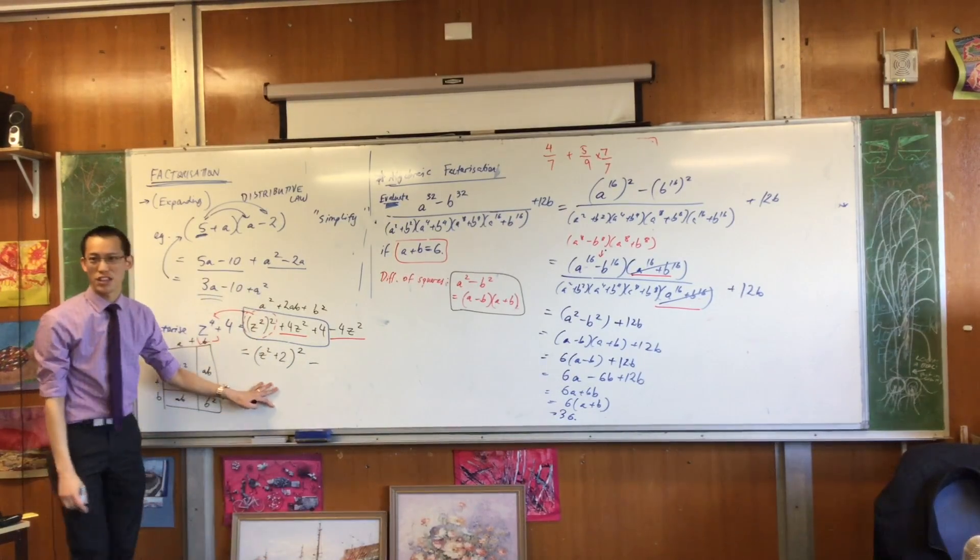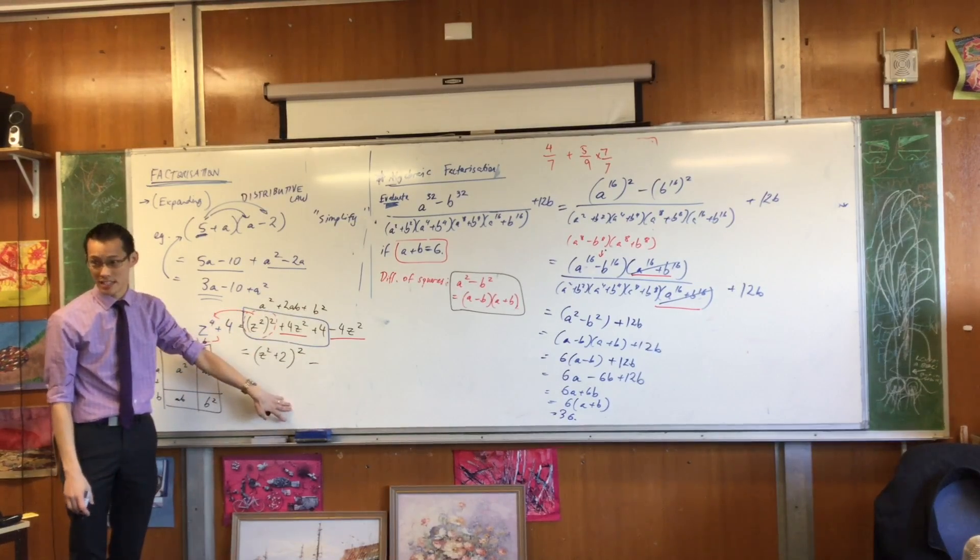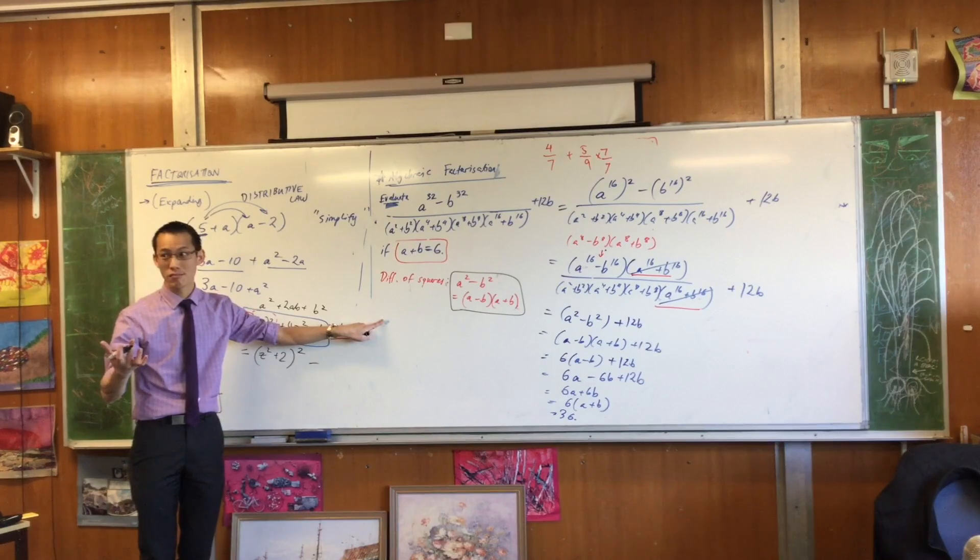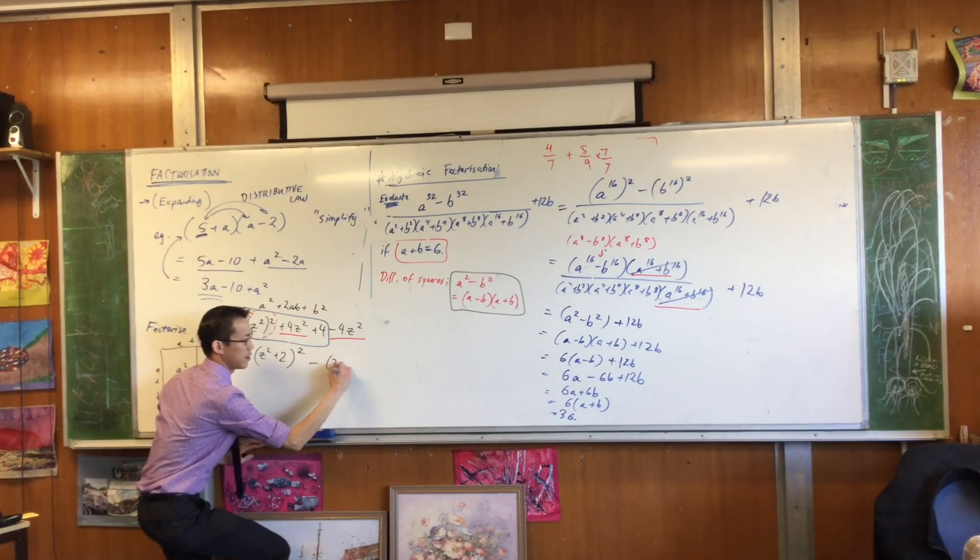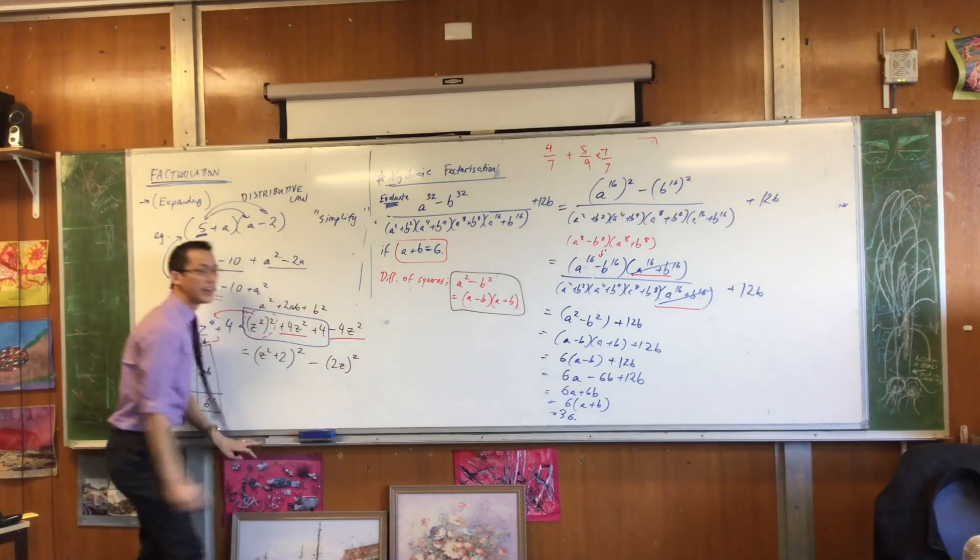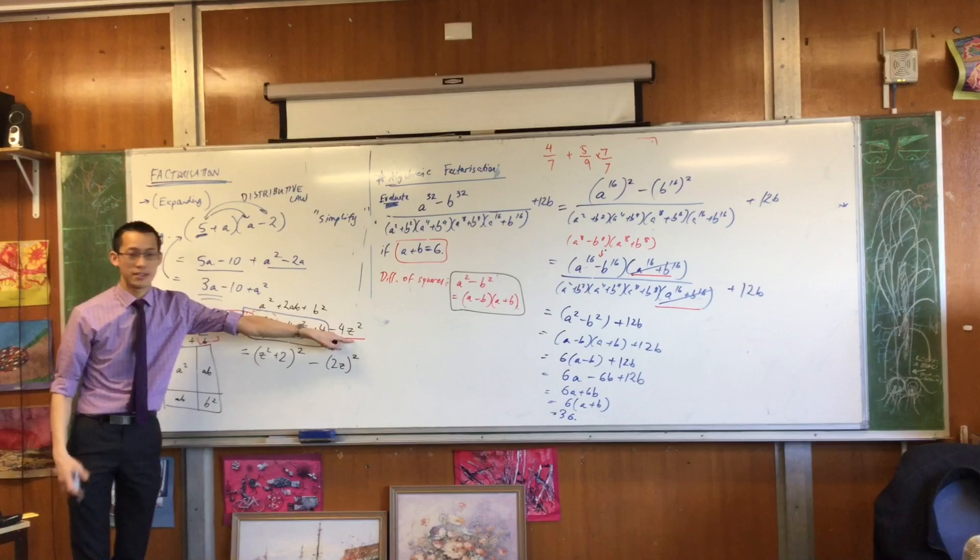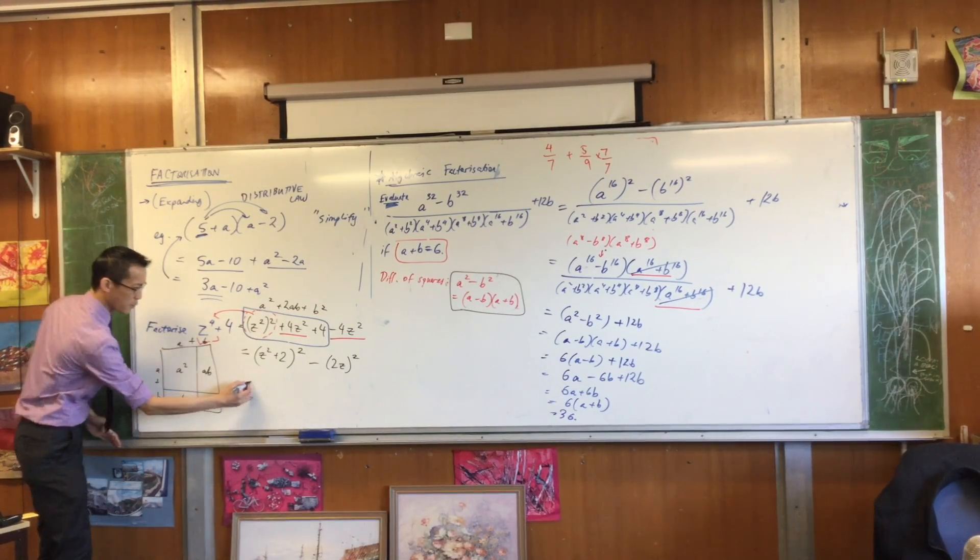Then you have this guy off on the end. I'm going to rewrite it slightly differently to make it more obvious what my next step is. 4z squared is also a square. What's it the square of? 2 and z. Yeah. It's 2z all squared. Do you notice that? The 2 gets squared, and then the z gets squared. And now we're almost there. We're almost there. What can I use now?